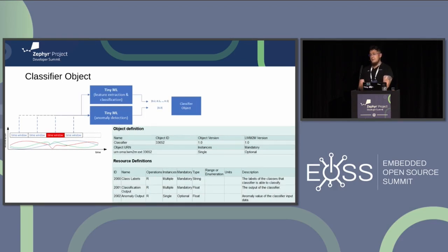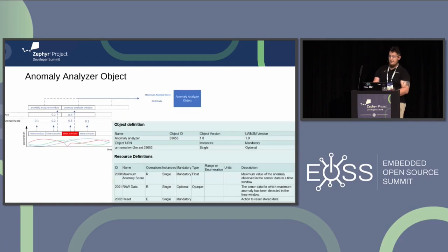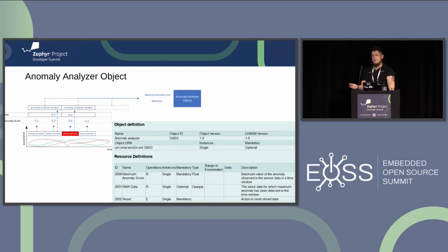We also have the classifier object, which is used to report the detailed results of the anomaly detector and the classifier output — updated with each iteration of the ML model operation. This could involve a lot of data sent, or we can just check that a specific state occurred on the device and send a notification about that. We also have the anomaly analyzer object — if an anomaly is detected on the device, this object will gather the data that happened during that anomaly period, so we can do further inspection to check if readings are incorrect or the model needs relearning.